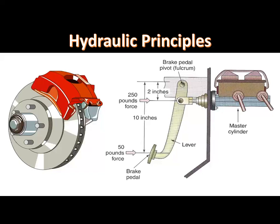Brake system principles that must be understood include the following. If the master cylinder piston bore diameter is decreased, the pressure exerted by the master cylinder increases for a given pressure on the brake pedal. If the master cylinder piston bore diameter is increased, the pressure decreases for a given pressure on the brake pedal. A smaller diameter master cylinder requires more piston travel to displace the same amount of fluid as a larger piston. The force on the brake pedal and the diameter of the master cylinder piston determine the pressure in the brake system. The diameter of the wheel cylinders or calipers determines the force against the brake shoes or pads, and a larger diameter piston exerts more force.